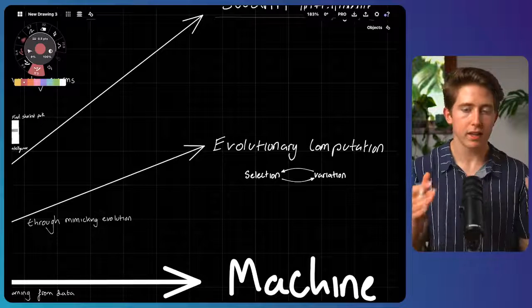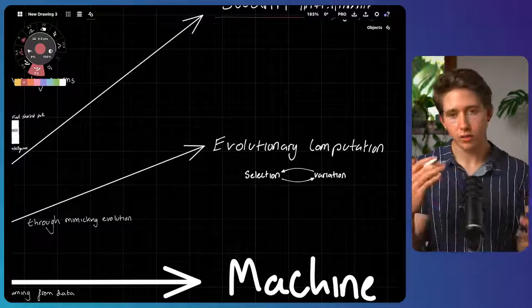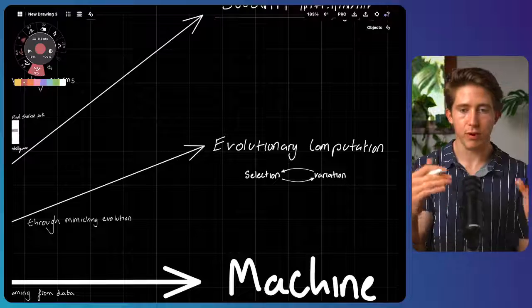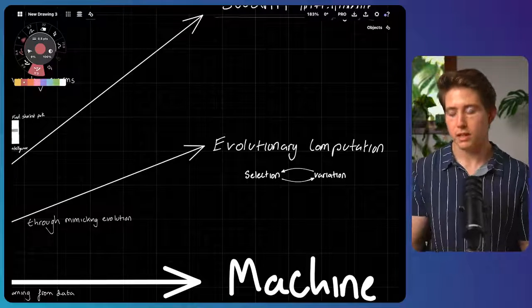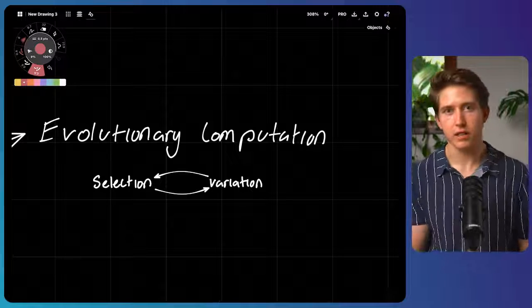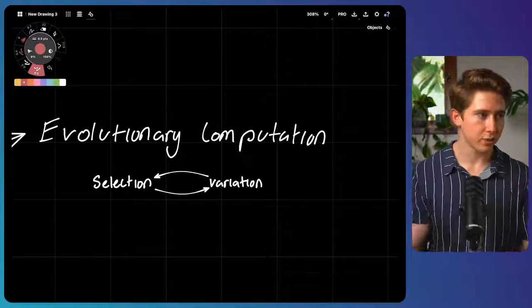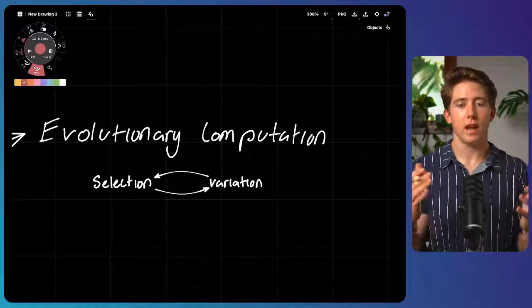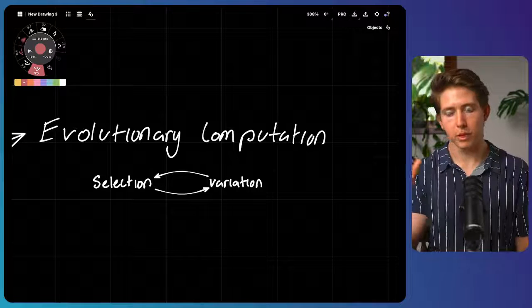The second kind is also inspired by biology, where it's a kind of intelligence that stems through mimicking evolution. Because just like in evolution, intelligent creatures have resulted from very, very simple rules. Just through the pure repetition of selection and variation, through just mutation and natural selection, we've slowly been able to develop very, very complex organisms.